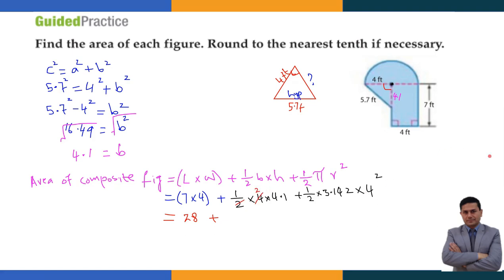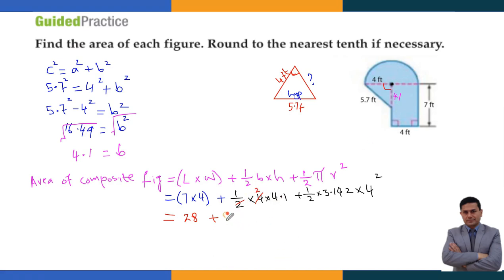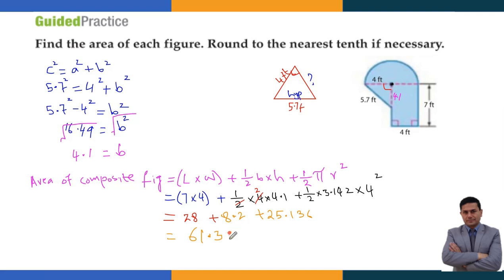Now calculating: 7 times 4 is 28. For the triangle: the 2 cancels with 4, giving 4.1 times 2 equals 8.2. For the semicircle: 16 divided by 2 is 8, and 8 times 3.142 equals 25.136. Adding all together: 28 plus 8.2 plus 25.136 equals 61.3. So the area of the composite figure is 61.3 feet squared.